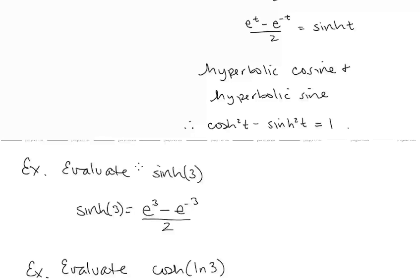Let's evaluate sinh(3). We know sinh(t) = (eᵗ − e⁻ᵗ)/2, so sinh(3) = (e³ − e⁻³)/2.